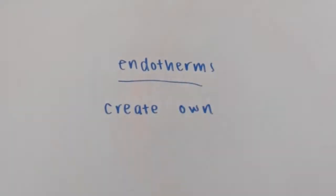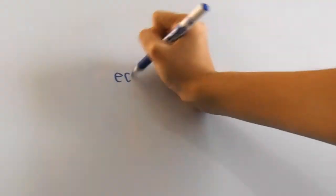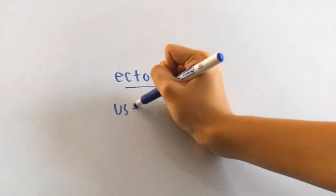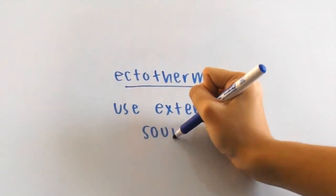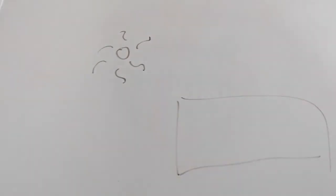Endotherms create their own heat through metabolic processes, and ectotherms regulate their temperature by using external sources. An example of an ectotherm is a snake basking in the sun when it's cold. To raise its temperature, it slithers onto this rock to gain heat.